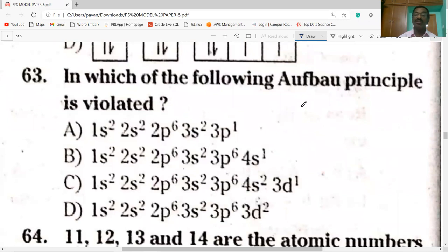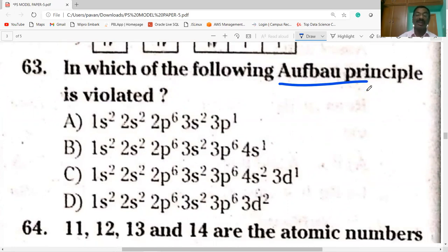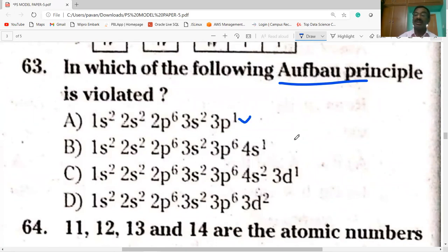In each of the following, Aufbau principle is violated. Aufbau principle: electrons enter into the orbital having least energy. 1s2, 2s2, 3s2, 3s1 is according to Aufbau principle. These are also according to Aufbau principle. This is the option which is violated. Here 1s2, 2s2, 2p6, 3s2, 3p6. After 3p6 the electron must enter into 4s orbital, so 4s2. But instead of 4s2, 3d2 is here, it is violation of Aufbau principle.